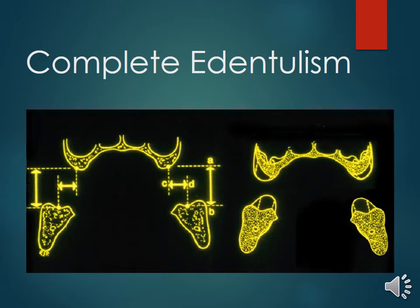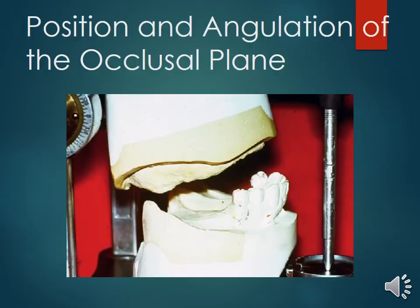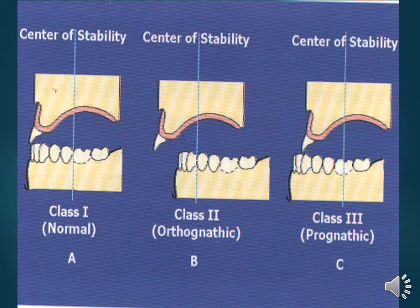In complete edentulism, the arch and bone undergo resorption from the upper and lower jaw, leading to different relationships between the maxilla and the mandible — resulting in a smaller maxilla and a wider mandible. The position and angulation of the occlusal plane can differ with ridge resorption, and the center of stability will differ in class 1 versus class 2 and 3 relationships.